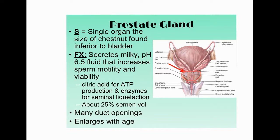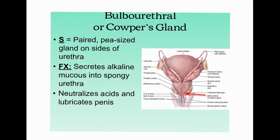The prostate gland is located inferior and slightly posterior to the urinary bladder. Its secretions are milky and slightly acidic (around pH 6.5). It contains citric acid, which is important for ATP production. The prostate's products make up about 25% of semen by volume. The prostate enlarges with age, and males should check for prostate cancer, as it is a common cancer in males.